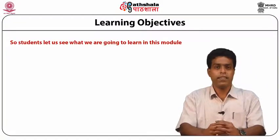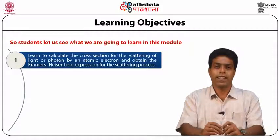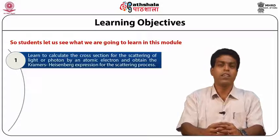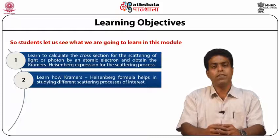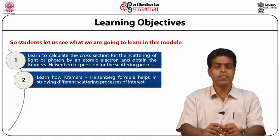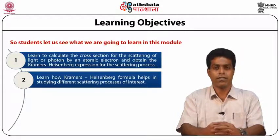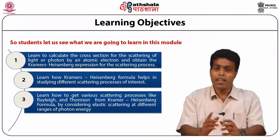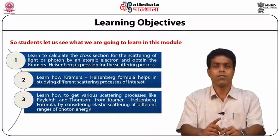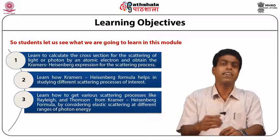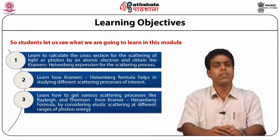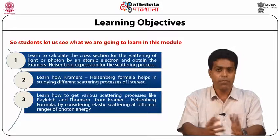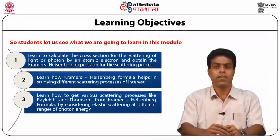Let us see what we are going to learn in this module. We will learn to calculate the cross-section for the scattering of light or photon by an atomic electron and obtain the Kramers-Heisenberg expression for the scattering process. We will learn how the Kramers-Heisenberg formula helps in studying different scattering processes of interest. We will also learn how to get various scattering processes like Rayleigh and Thomson from the Kramers-Heisenberg formula by considering elastic scattering at different ranges of photon energy. We will learn how the Kramers-Heisenberg formula for inelastic scattering can describe Raman scattering of different types.